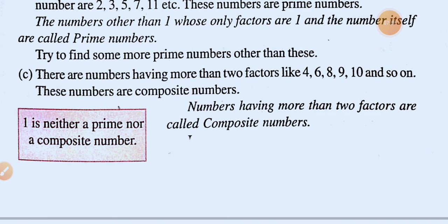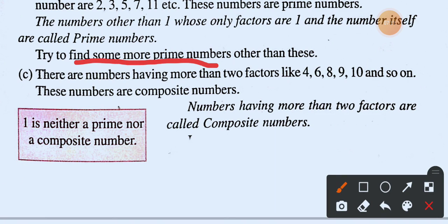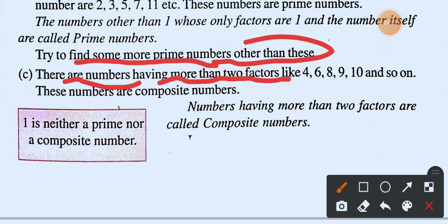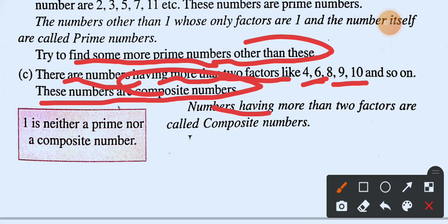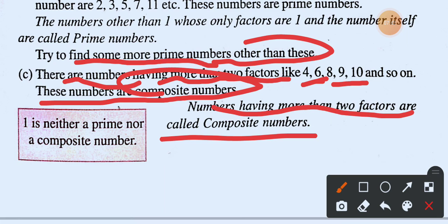There are numbers having more than two factors, such as four, six, eight, nine, ten, and so on. These are called composite numbers. A composite number is a number having more than two factors. Note that one is neither prime nor composite.